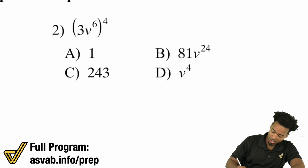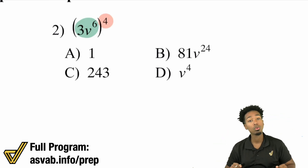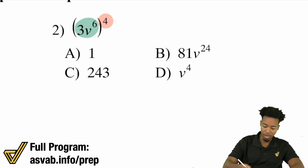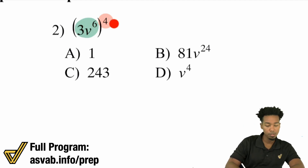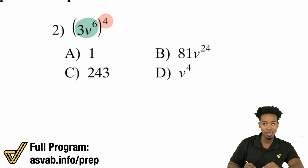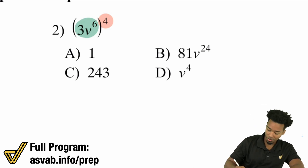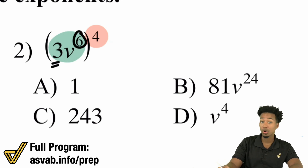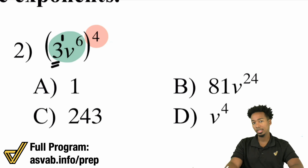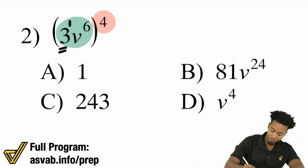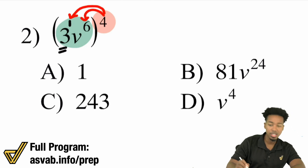Here's how we're going to take care of this. What we have is the entirety of 3V to the power of 6, all to the power of 4. When you have just one monomial — 3V to the power of 6 — all connected, with a parentheses exponent outside, you're still going to multiply those exponents. But you have to be very careful in identifying the exponents themselves. Take a look at the 3 — what exponent does the 3 have? You might be tempted to say 6, and that is not correct. The 3 has a power of 1.